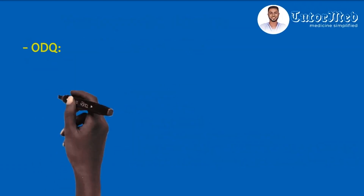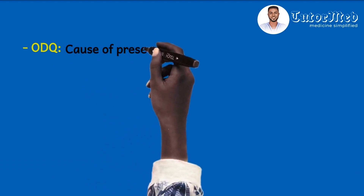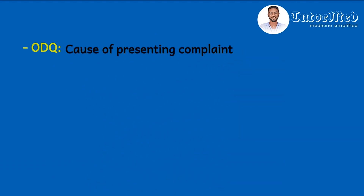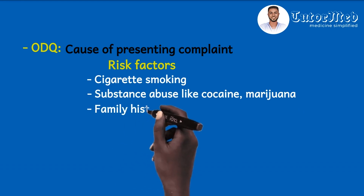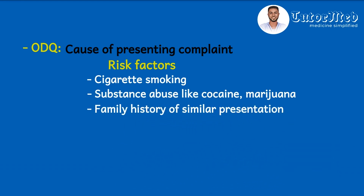For indirect questioning regarding risk factors: significant cigarette smoking, recreational drug abuse such as cocaine and marijuana are key risk factors. Vasospastic angina also has a genetic predisposition, so we ask for family history of a similar presentation. Regarding complications, vasospastic angina can sometimes lead to arrhythmias, so you want to ask about palpitations and syncope.